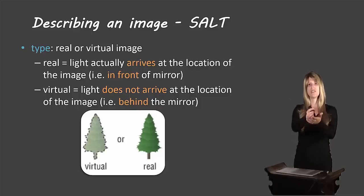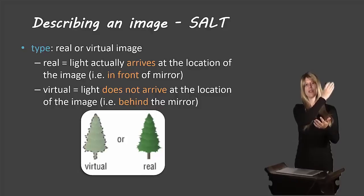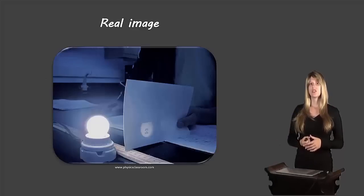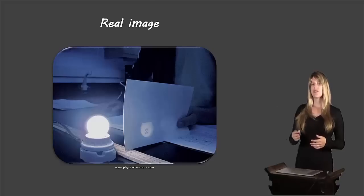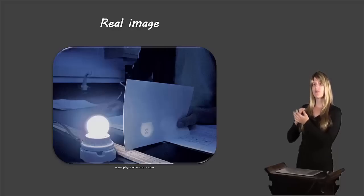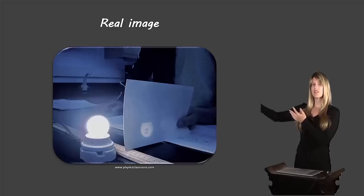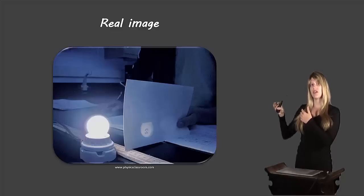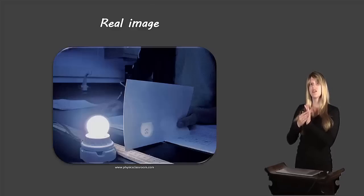On the other hand, if light bounces off the mirror and the image is located on the same side as the original object, that would be a real image. This picture shows what a real image looks like — there's a mirror on the far left. This doesn't happen with plane mirrors, but it will happen with curved mirrors we'll look at later. The light from the light bulb bounces off the mirror and comes back; if you put a screen there, the image of the light bulb appears on it. Since it's on the same side as the original object, we call that a real image.